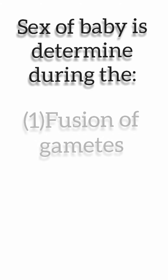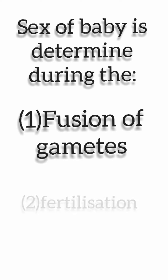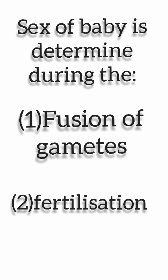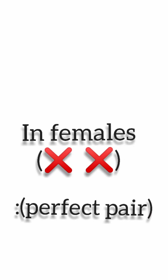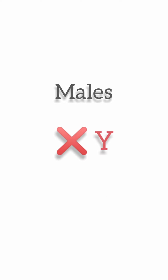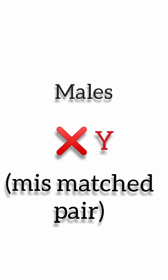The sex of a baby is determined by the fusion of gametes. In females, the chromosome pattern is XX, which is called a perfect pair. In males, the chromosome pattern is XY, and it is also called a mismatched pair.